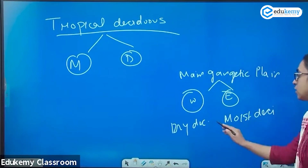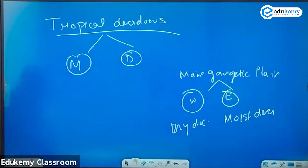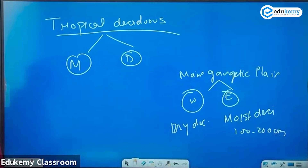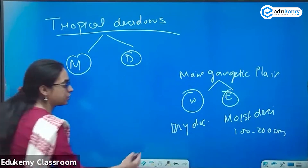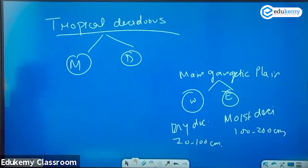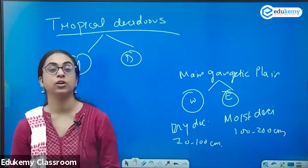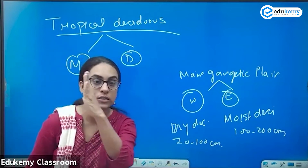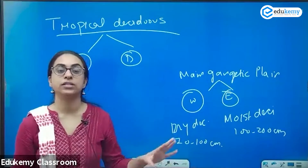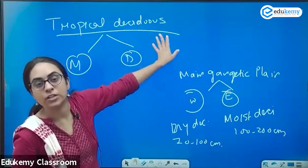What is the reason? Moist deciduous corresponds to around 100 to 200 centimeters of rainfall, as we have already shown on the isoheight map. Dry deciduous is 70 to 100 centimeters. The reason is the rainfall map. There has been a question in UPSC about the changing pattern of vegetation when you travel across this region — that question can only be attempted if you have integrated the rainfall map with the vegetation type.